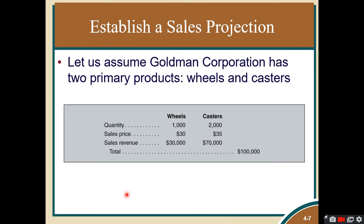Using Goldman Corporation as our example — a company that produces two main products, wheels and casters — we have the quantity, sales price, and sales revenue giving a total of $100,000. For the wheels, you're expecting sales of $30,000, and for casters, $70,000, totaling $100,000. Sales revenue is computed by simply multiplying the quantity by the sales price. These projections are based on information from previous periods.